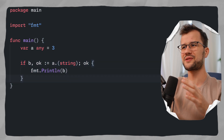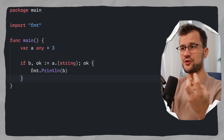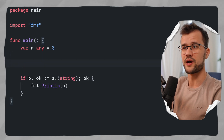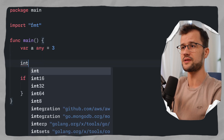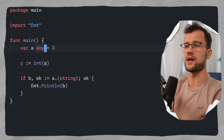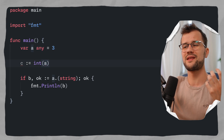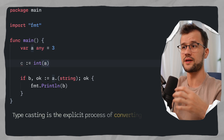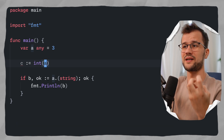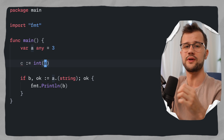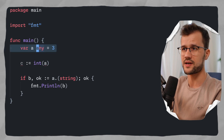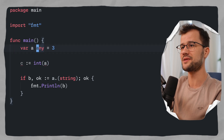Casting and type assertions are different concepts. Casting means converting a value to another compatible type — for example, 'int(a)' — but this does not work when 'a' is an interface. Type assertions in Golang are used to extract a concrete value from an interface type. Since 'a' doesn't have a specific type here, we need type assertions, not casting.